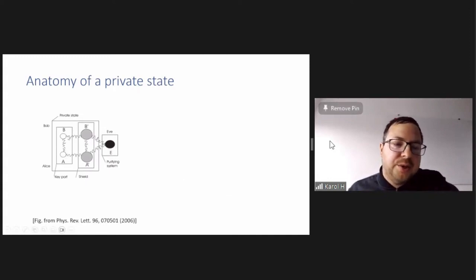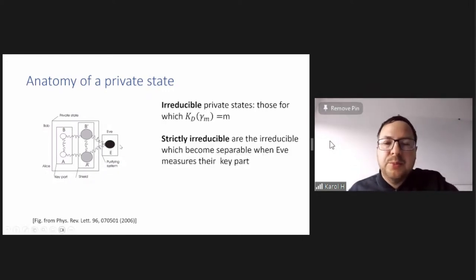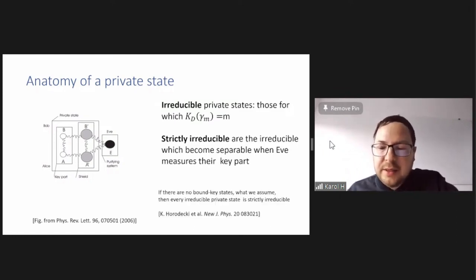So the anatomy of a private state is, visualization is that there's this key part, which when you measure you get key, there's a shield which you have to store forever in some place, separated from Eve, because Eve holds purification, so once she gets shield there is no key. What's important here is the class of irreducible private states, these are those that have, that a private state gamma M is irreducible if it has exactly M key bits, so there is no more key in that, so a whole key is in the shield. And strictly irreducible, which becomes separable means insecure, when Eve measures their key part, namely if she attacks it or the key leaks, then there is no more key in the state. And these are important notions, they are related, namely, if there are no bound key states, like we assume here, then every irreducible private state is actually strictly irreducible, so after attacking it becomes separable.